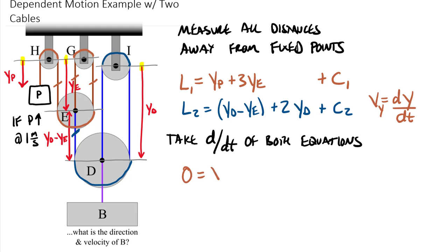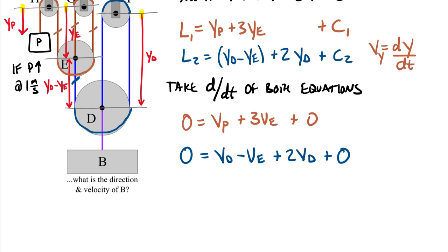This is going to become the velocity of P plus 3 times the velocity of E, and then we're going to have a zero coming out of the derivative of that constant C1. Switching over to blue, we have zero, that's the time derivative of L2. This becomes the velocity of D minus the velocity of E, and adding to that 2 times the velocity of D, plus the derivative of constant C2 gives me a zero.